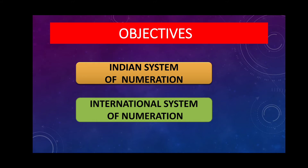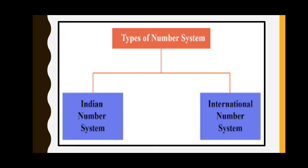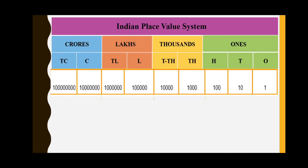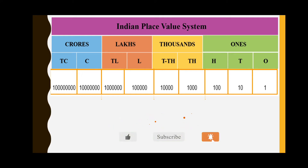First, we are going to see the Indian system of numeration. We have two types of number systems: one is the Indian number system and the other is the international number system. In the Indian number system, the place value chart is read from the right side: ones, tens, hundreds, thousands, ten thousands, lakhs, ten lakhs, crores, and ten crores.